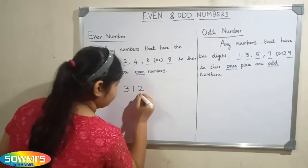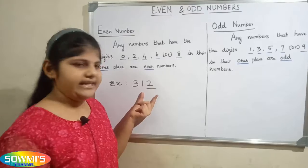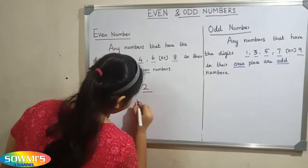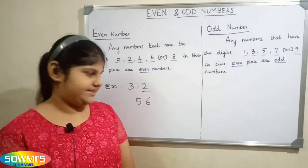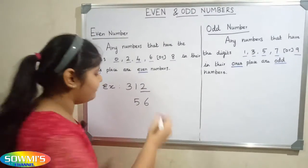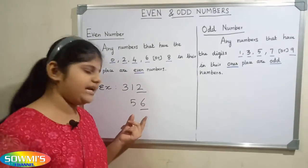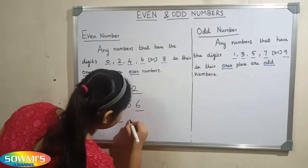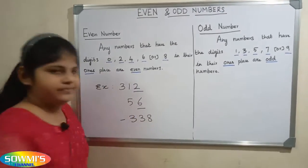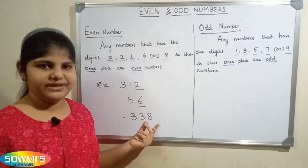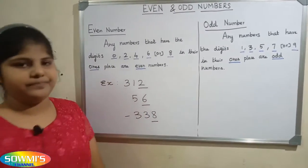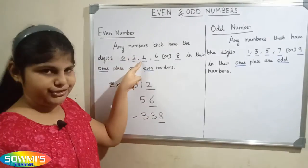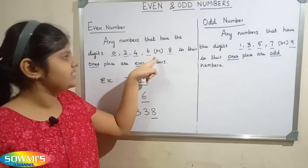In the ones place it ends with 2, so this is an even number. Let us take another example: 56. You can see the number ends with 6, so this is an even number. Let us take one more example: -338. Here the number ends with 8, so this is an even number. Always an even number ends with 0, 2, 4, 6, or 8.